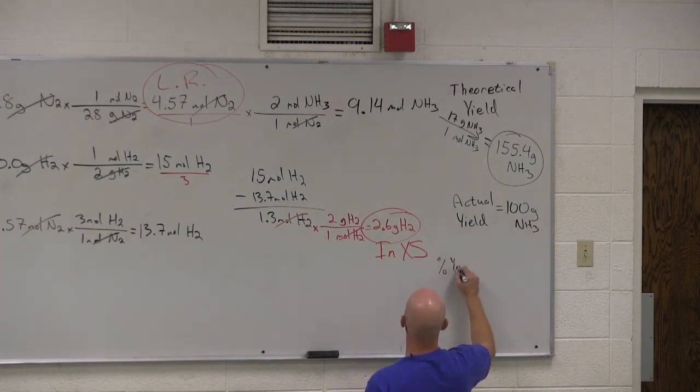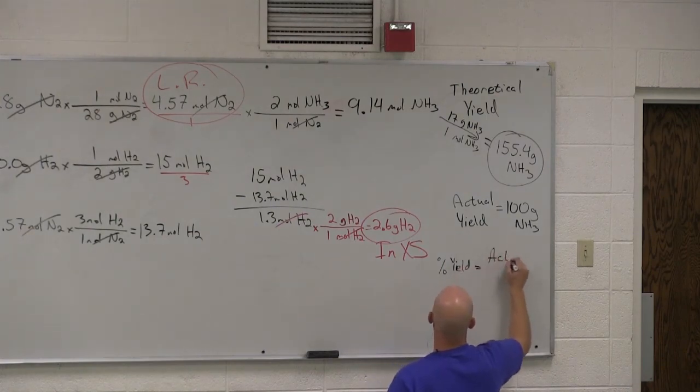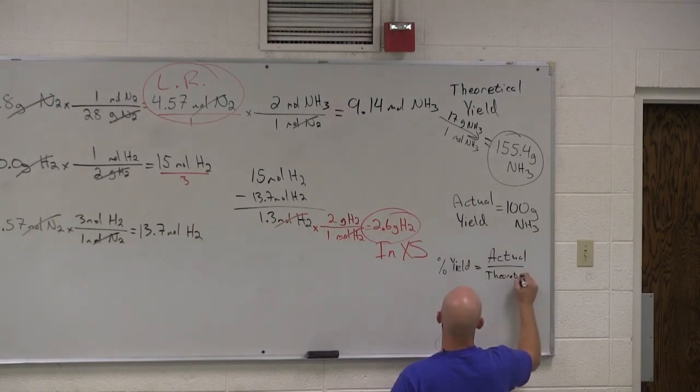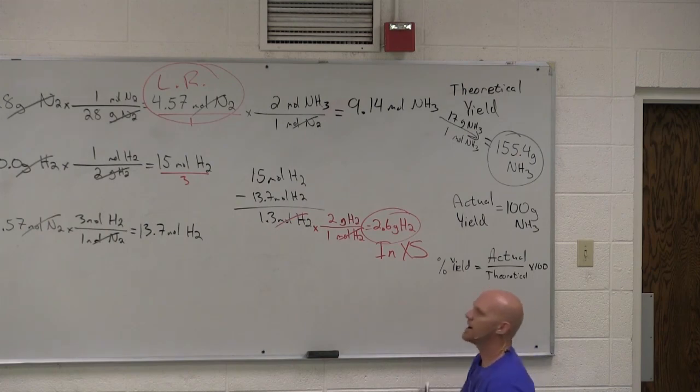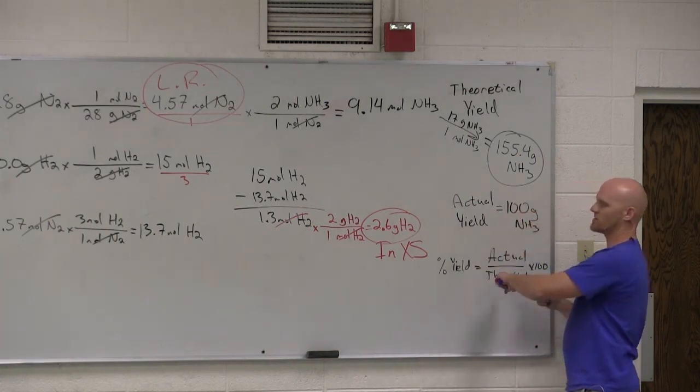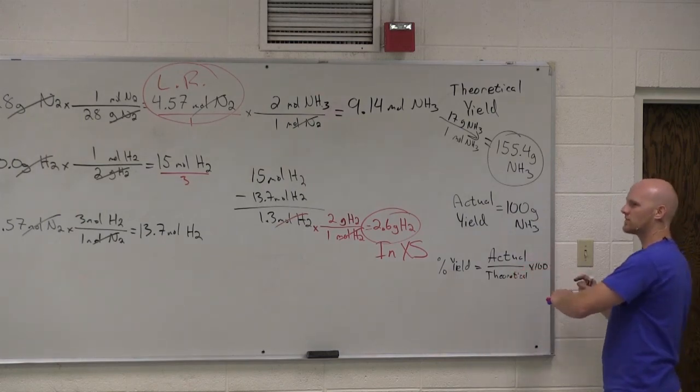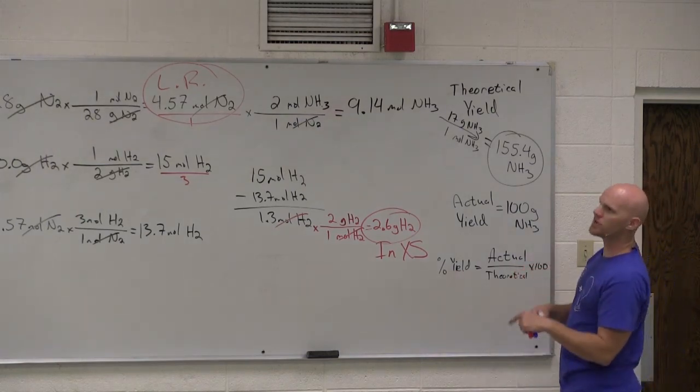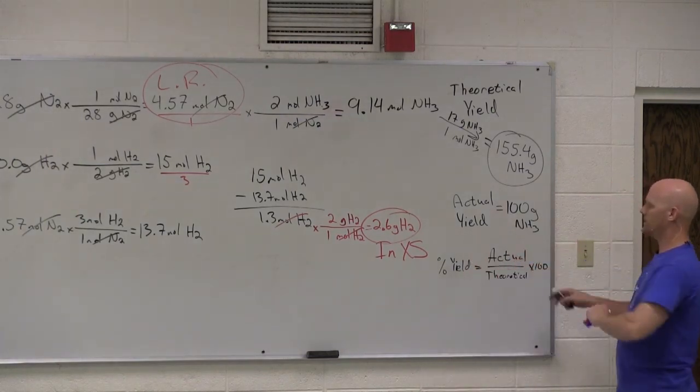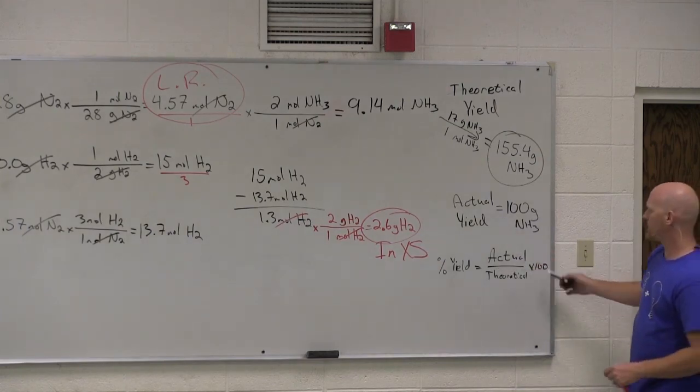So, your percent yield. Actual over theoretical times 100. The reason you thought it might have been the other is because you might be confusing this with percent error. And percent error says take the true value minus the calculated value all divided by the true value times 100. But that's something else entirely. Percent yield is just actual over theoretical times 100.